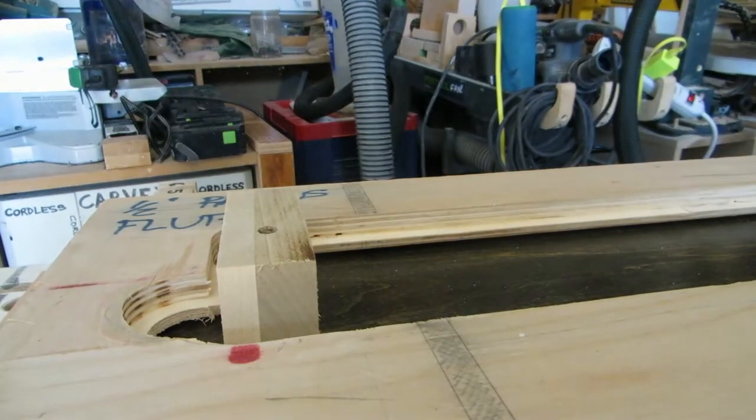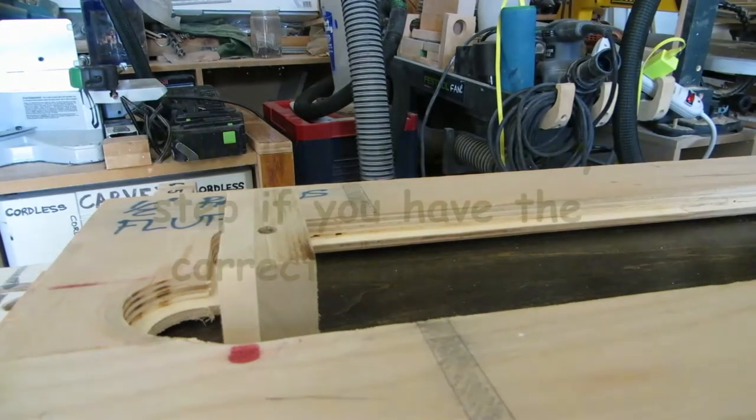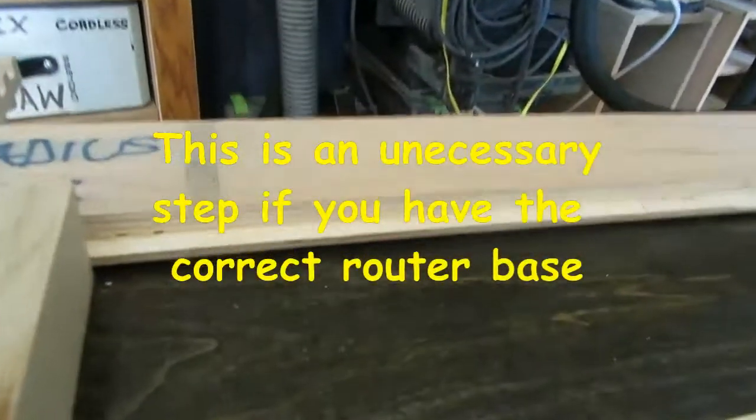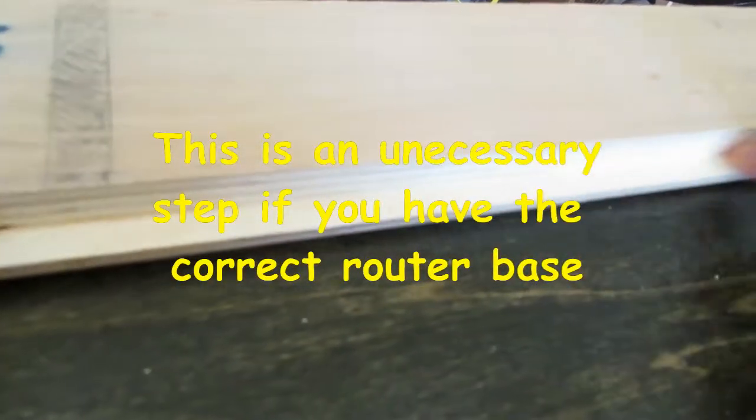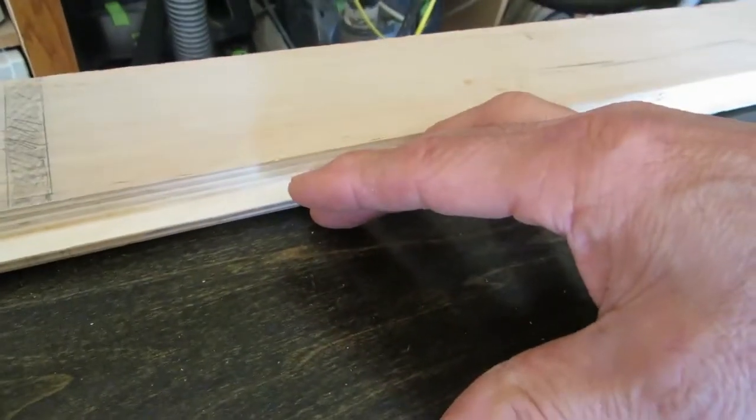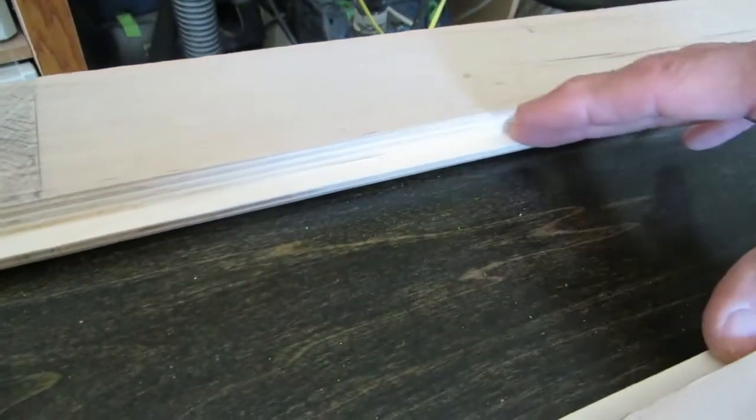So instead of building a new jig, I decided to modify this. I put a rabbet right here and on this side. And now the base can slide down. The router will clear this area here.